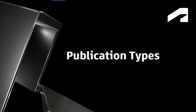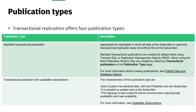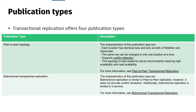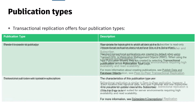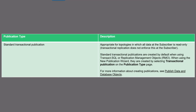Publication types. Transactional replication supports four different publication types: standard transactional publication, transactional publication, transactional publication with updatable subscriptions, peer-to-peer topology, and bidirectional transactional replication. Autodesk Vault uses standard transactional publication, which is appropriate for topologies in which all data at the subscriber is read-only.